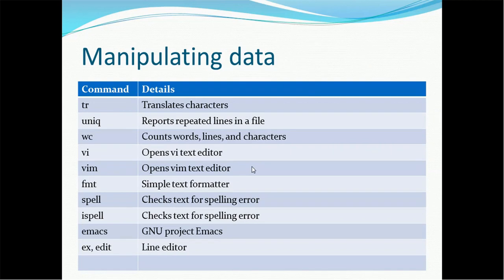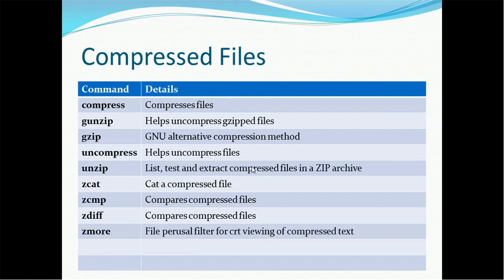SPELL checks the text for spelling errors — whatever internal dictionary it holds, it compares against that and checks the spelling of the content. ISPELL also checks text for spelling errors and is quite similar to SPELL. EMACS is a GNU project. EX is a line editor if you want to edit a file.